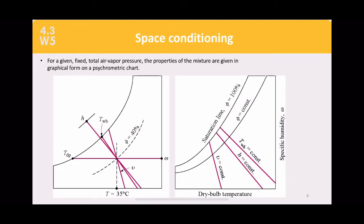On the left side is a psychrometric chart with a point at a dry bulb temperature of 35 degrees Celsius. Usually we need the dry bulb temperature as the starting point on the psychrometric chart. We also need another point — omega, TDP, or any given parameter — at least two, so we can find the other points.